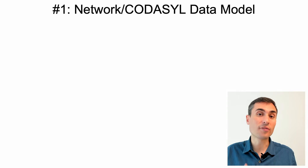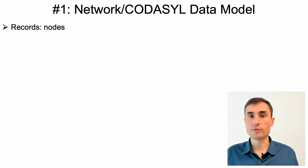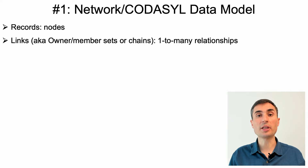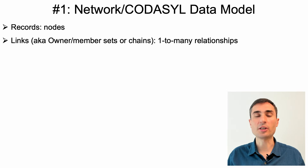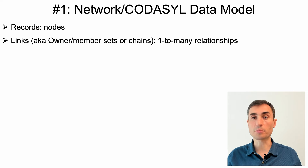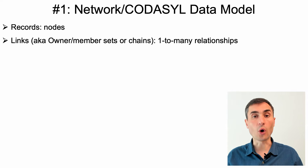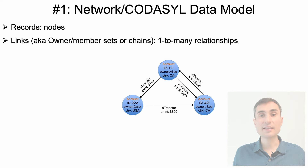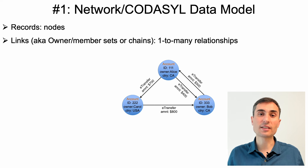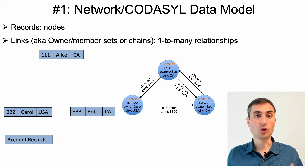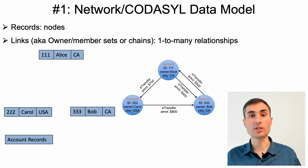Here is what the actual model of IDS looked like. First, there were records, which you can think of as your nodes — records had clear schemas, so their fields were predefined. Second, there were links, which were one-to-many relationships between records. This one-to-many limitation apparently existed to simplify implementing the model. The more common term used for links in the IDS system were owner-member sets or chains. The convention was to draw records as rectangles, not circles, back in the day.